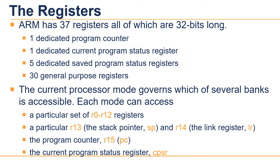In each mode, the core can access a particular set of 13 general purpose registers R0 to R12, and a particular R13 which is typically used as a stack pointer. This will be a different R13 for each mode, allowing each exception type to have its own stack.